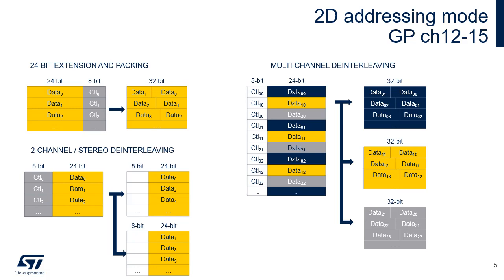In the last use case, data is de-interleaved and packed into three buffers. This could de-interleave the color components of RGB pixels. Similarly, a single channel or three channels can be used.